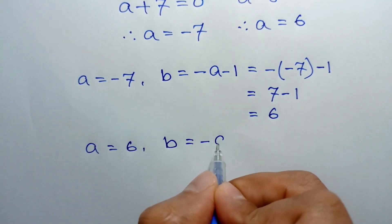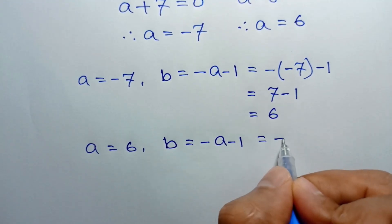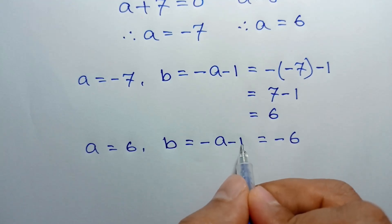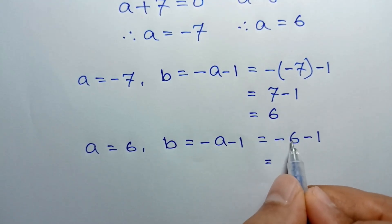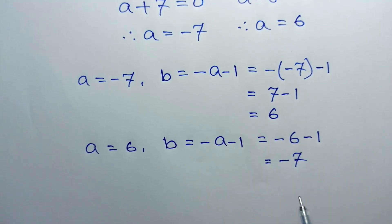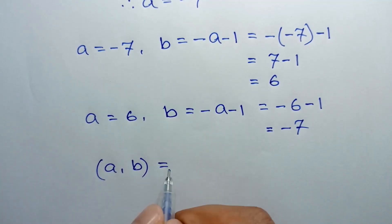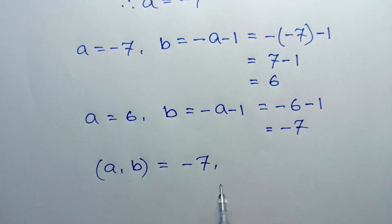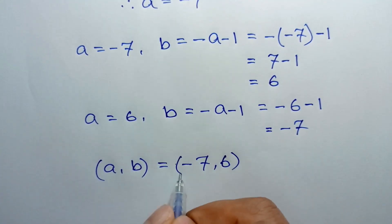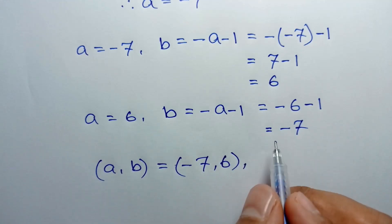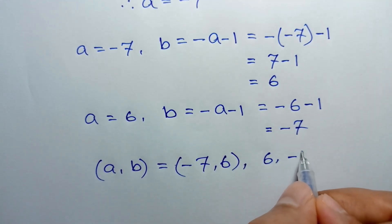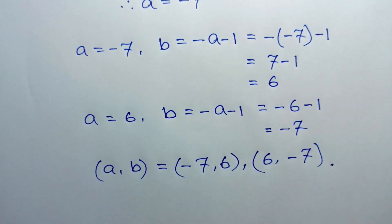When A equals 6, from equation 3, B equals negative A minus 1 equals negative 6 minus 1 equals negative 7. So the two solutions are: A equals negative 7 and B equals 6, or A equals 6 and B equals negative 7. Thanks for listening.